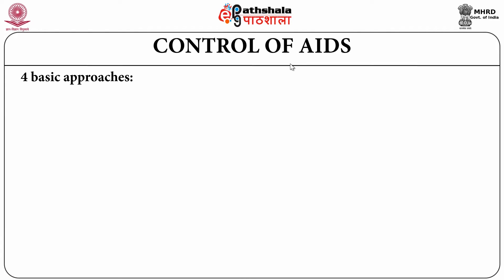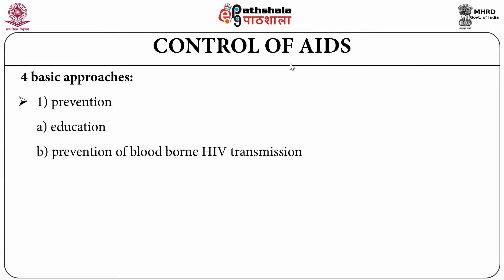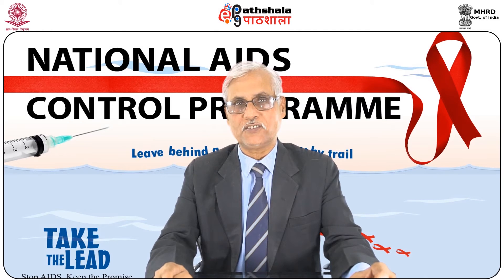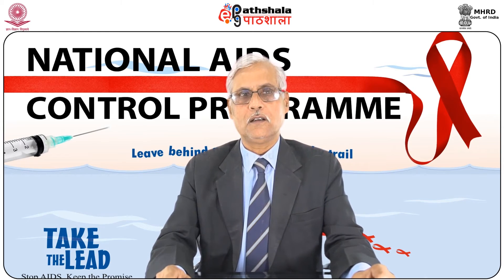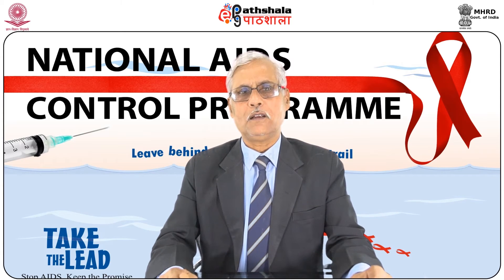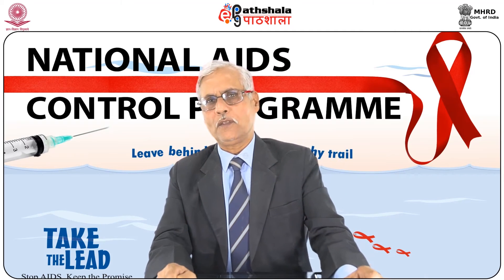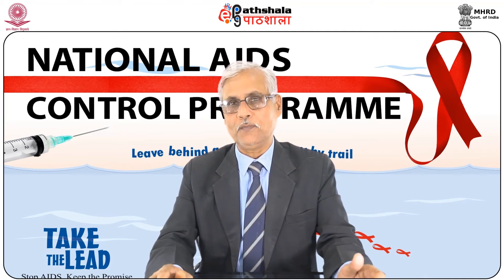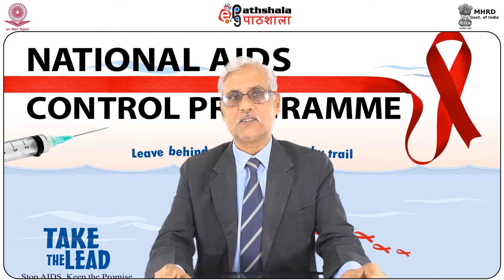Control of acquired immunodeficiency syndrome involves four basic approaches: prevention, education, prevention of blood-borne HIV transmission, antiretroviral treatment and specific prophylaxis, and primary health care. The National AIDS Control Program has been integrated into the country's primary health care system.